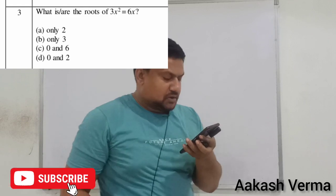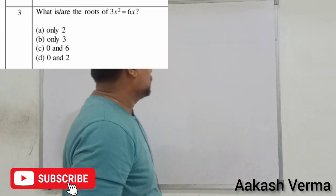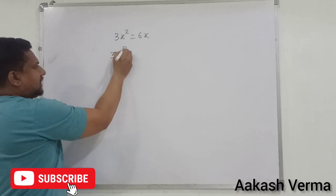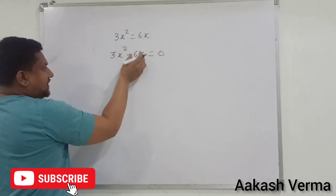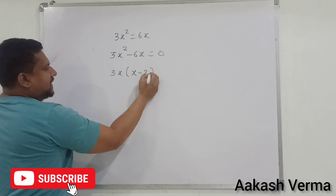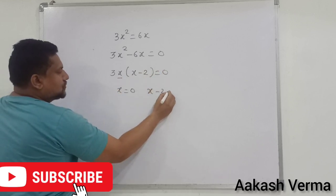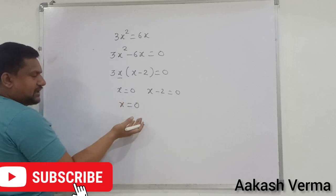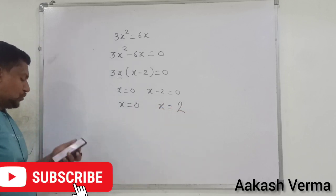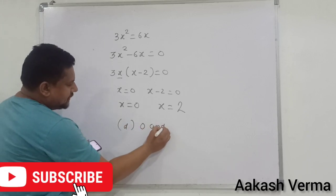Question number 3: what are the roots of 3x² equal to 6x? यहाँ x² है, तो दो roots होने चाहिए। इस question में 6x को transpose करके यहाँ लिखोगे, फिर 3x common लोगे, बचेगा x minus 2। फिर x को 0 के equal रखोगे और x minus 2 को 0 के equal रखोगे। तो x equal to 0 और x equal to 2 मिलेगा। Correct option D है — 0 and 2.